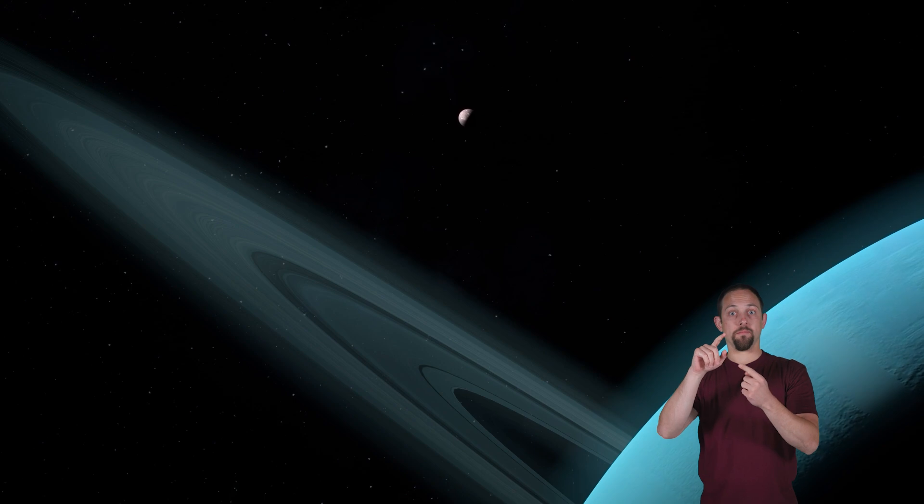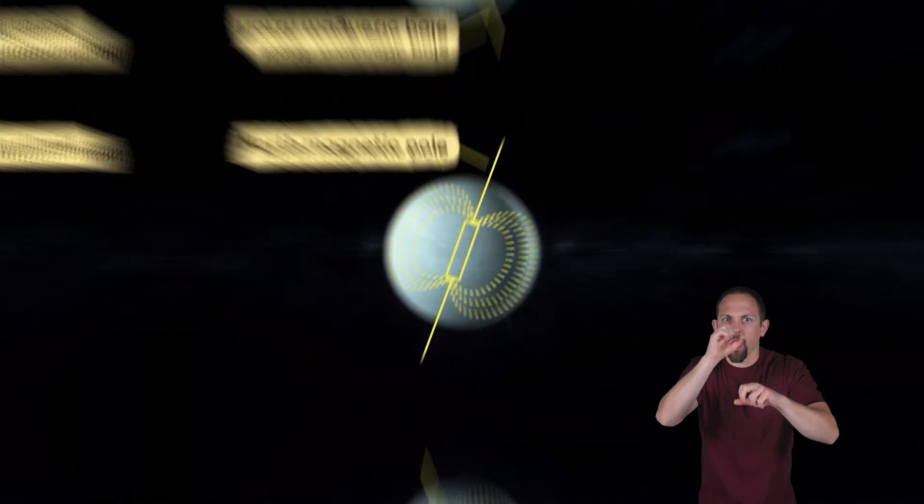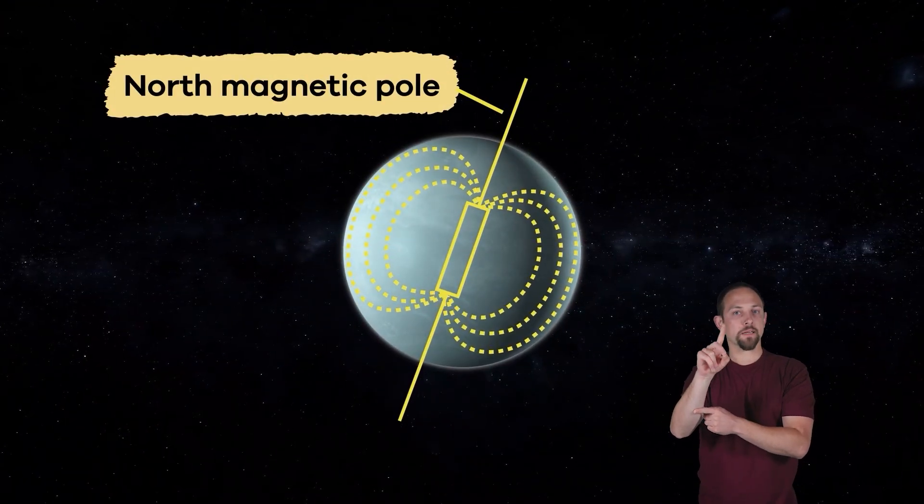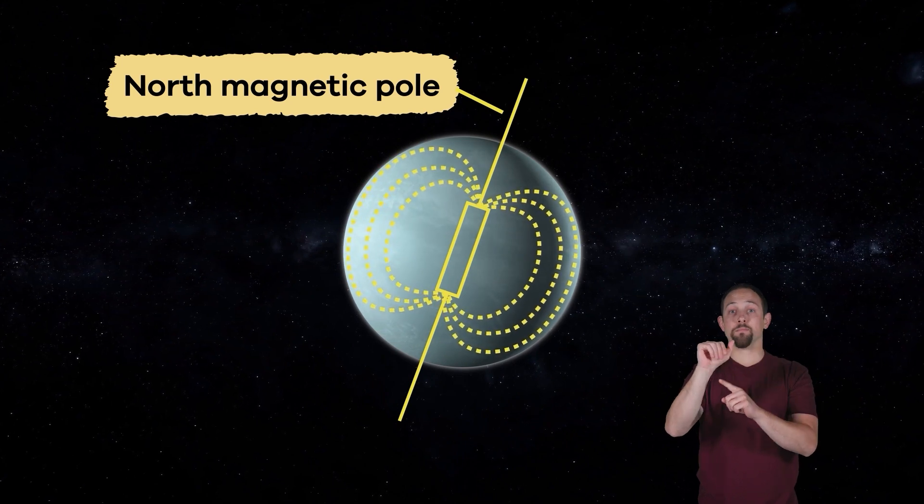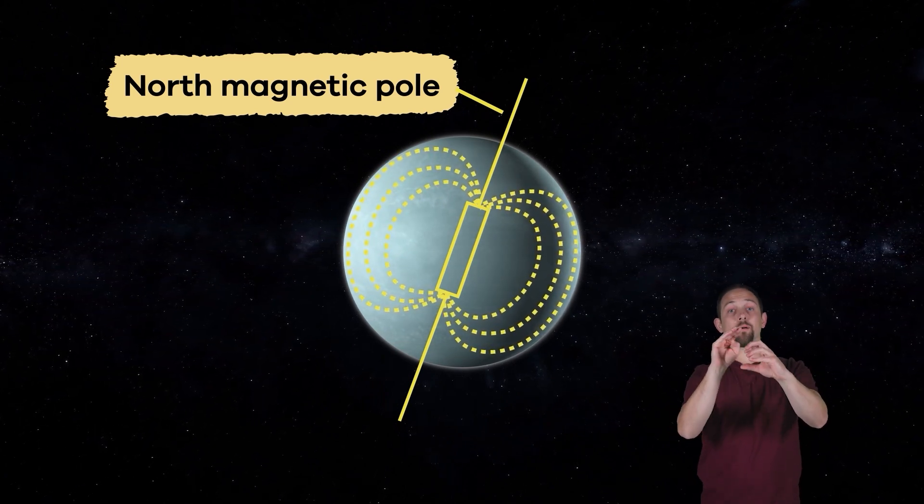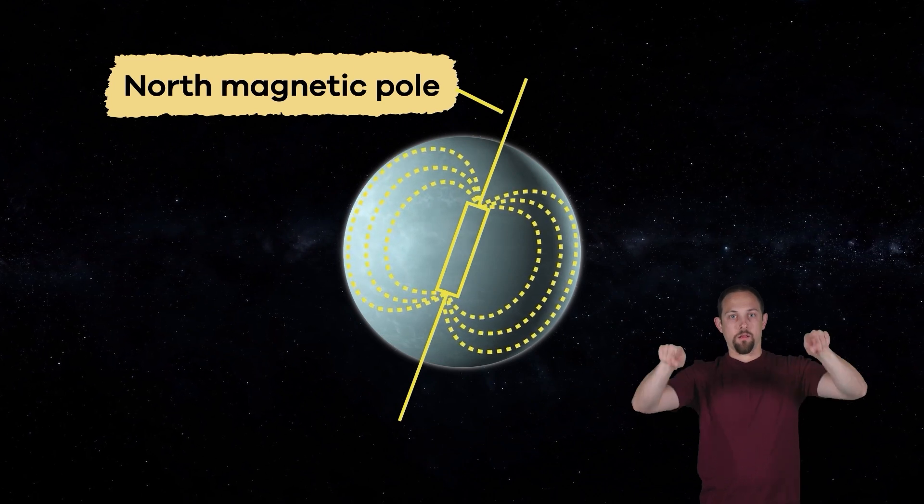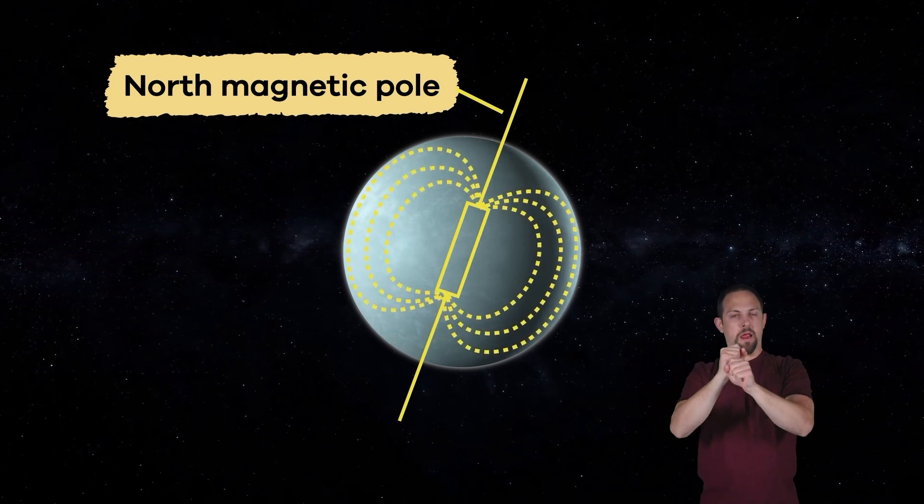Another fascinating element that keeps scientists on their toes is Uranus' magnetic field. Unlike most other planets, whose magnetic fields align with their poles, this planet's magnetic field is tilted and offset from its center. This creates unusual energy and radiation patterns.